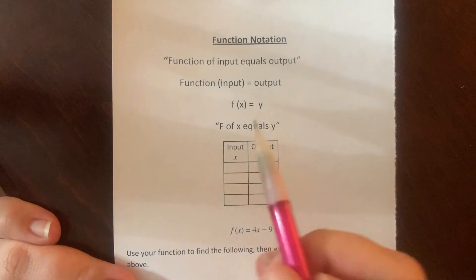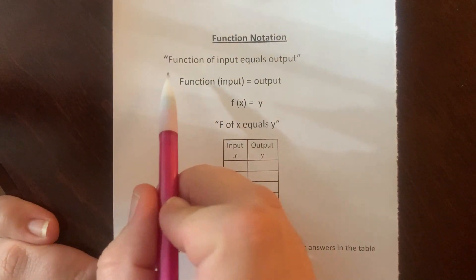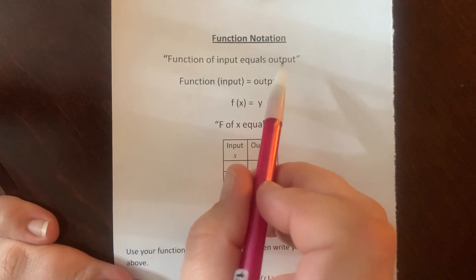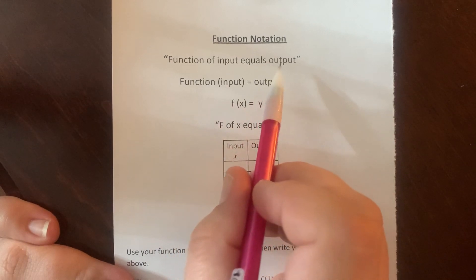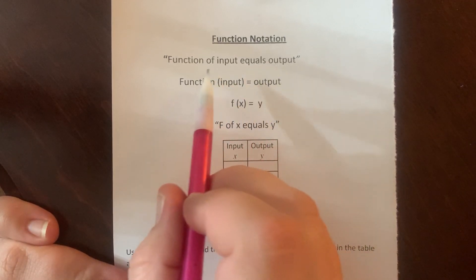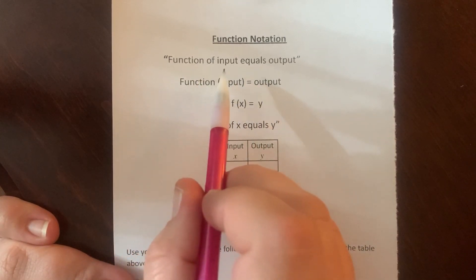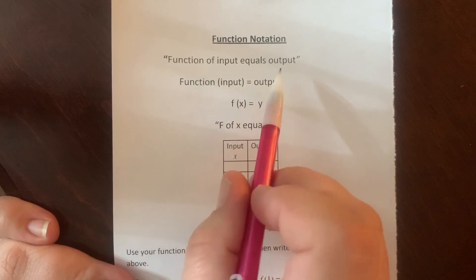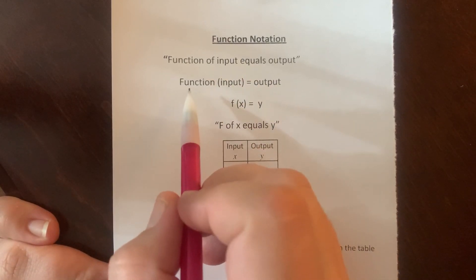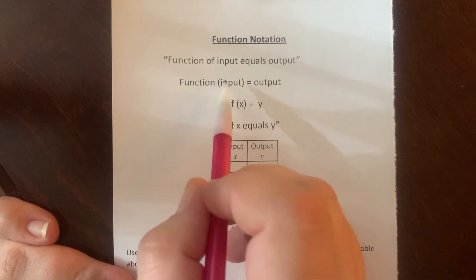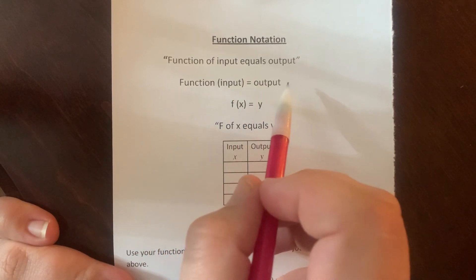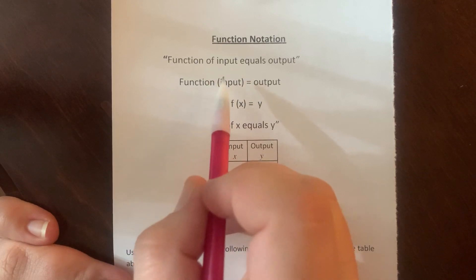So first off, how do we read it? Function of input equals output. So this is the words that should be going on in your head when you see function notation. Now if we take that sentence, function of input equals output, we can start replacing it with notation as we go step by step. Function, parentheses, input equals output.